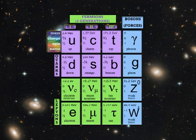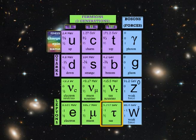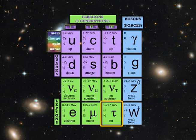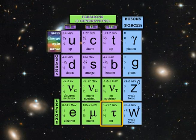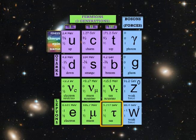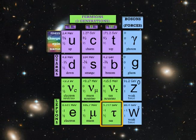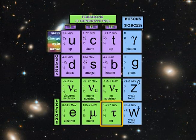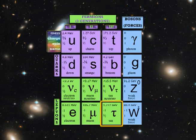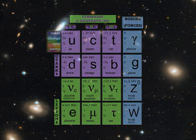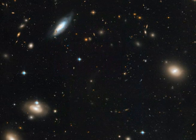Then there's a third family of particles. It has the bottom and the top quark, and they have a corresponding heavy cousin of the electron called the tau lepton.